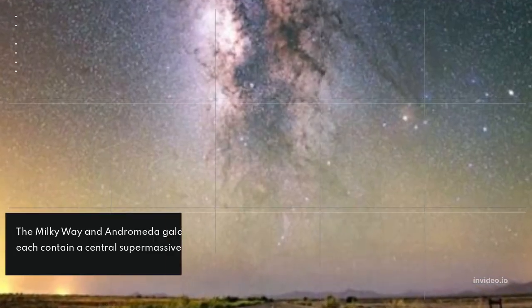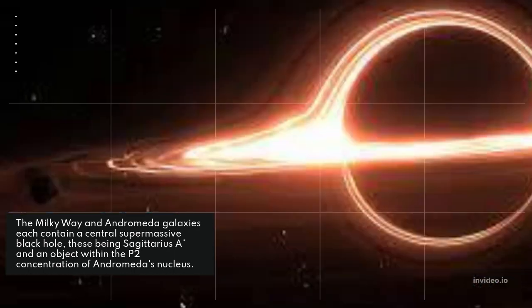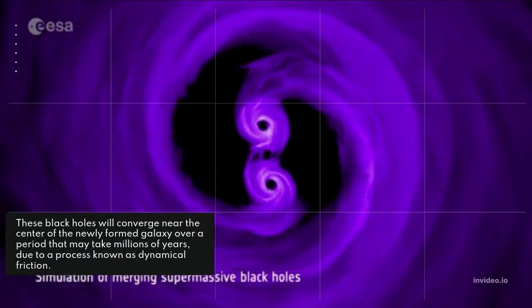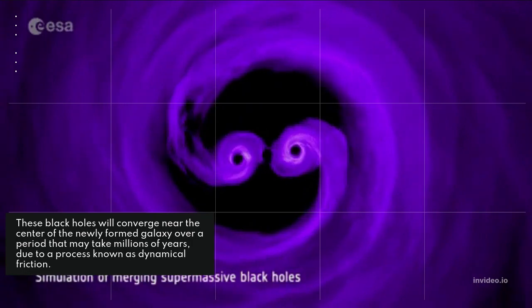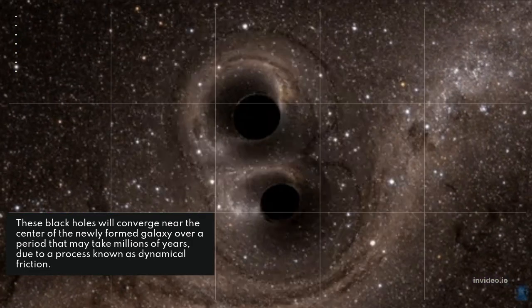The Milky Way and Andromeda galaxies each contain a central supermassive black hole: Sagittarius A* and an object within the P2 concentration of Andromeda's nucleus. These black holes will converge near the center of the newly formed galaxy over a period that may take millions of years due to a process known as dynamical friction.